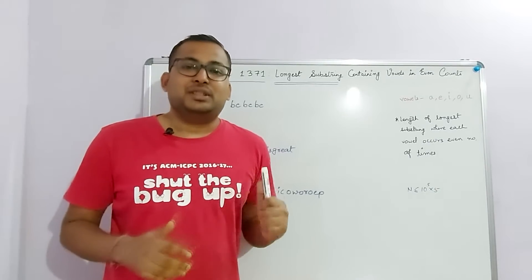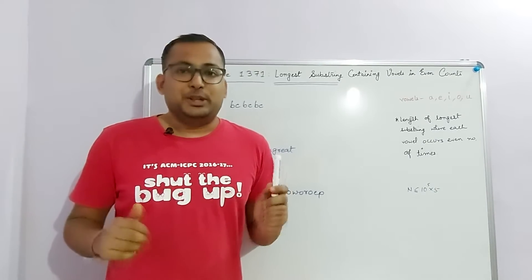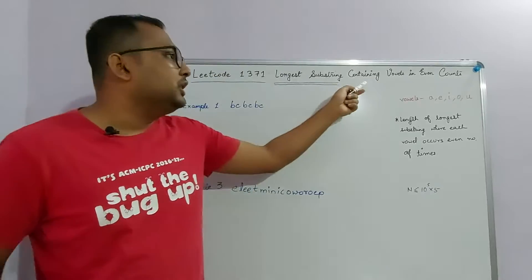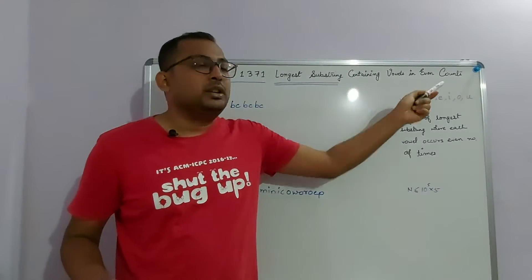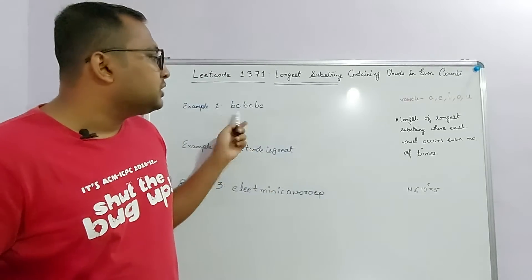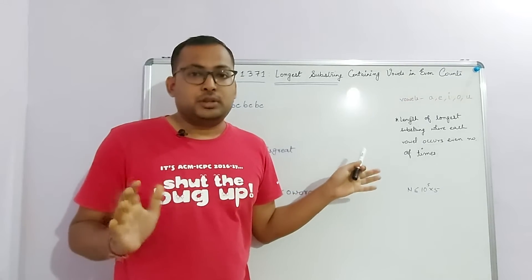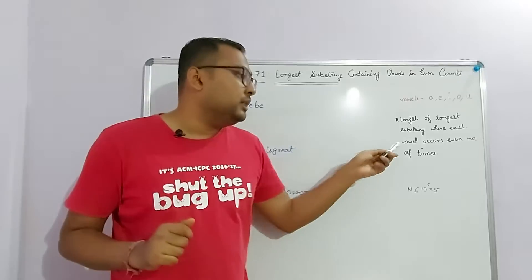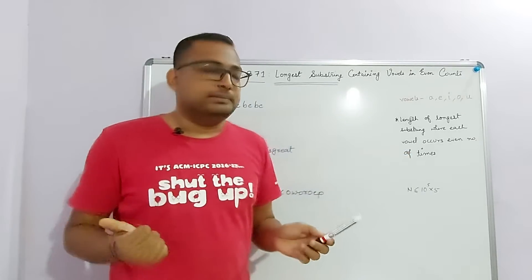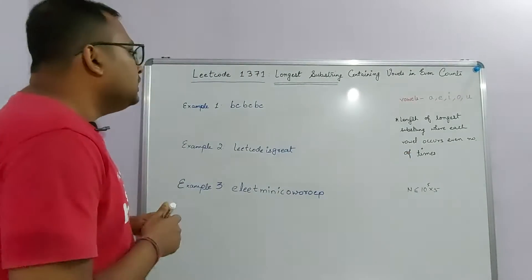Hey everyone, my name is Sandeep and in this video I will be showing you how to solve LeetCode problem 1371: longest substring containing vowels in even counts. The problem statement is: you are given a string and you need to find the length of the longest substring where each vowel has occurred an even number of times. The vowels are A, E, I, O, U.